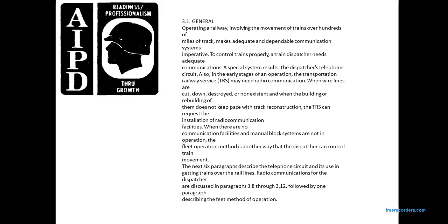Wire lines cut down on destroyed and non-existent infrastructure for track rebuilding. Reconstruction of Transportation Railway Service can be requested. Installation of radio communication facilities is used where there are no communication facilities and manual block systems are not operational. This is another way the dispatcher can control train movement.